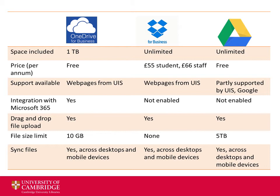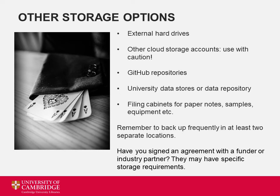The university offers cloud storage options including Google Drive, Dropbox, OneDrive, and SharePoint. These are supported by UIS, the university IT services, and so they are more secure than personal cloud storage accounts. Other storage options may include external hard drives, other cloud storage accounts, GitHub repositories, the university data repository, as well as physical filing cabinets for paper notes or lab samples. However you choose to store your data, make sure it is secure and meets any funder or partner requirements. Remember to back up regularly in at least two separate locations. Before you start storing your data, it's worth taking time to plan where you'll do this and what your backup schedule will be. If you're working with a research group, make sure data is stored somewhere everyone who needs it can access.